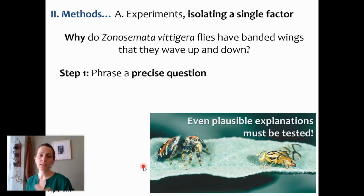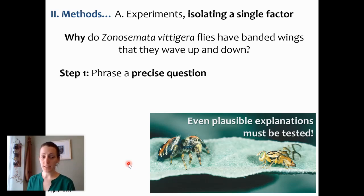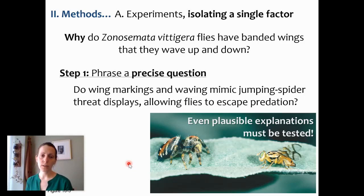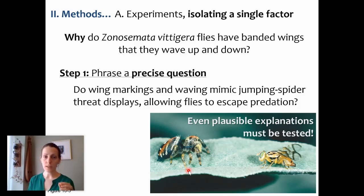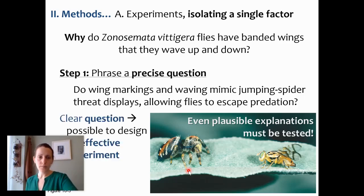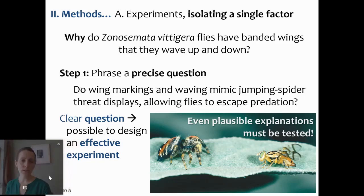Our question is: why do these flies have these wings? But we need a really precise question. So here is the question we're going to use: do wing markings and the action of wing waving mimic the threat displays of jumping spiders, thus allowing flies to escape predation? Are the wing markings and waving related to fitness, and specifically in the context of not getting eaten by jumping spiders? It's a complex but precise question.